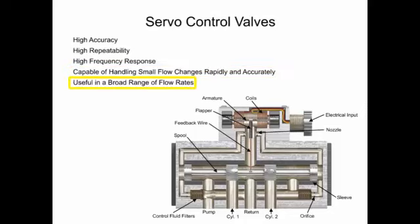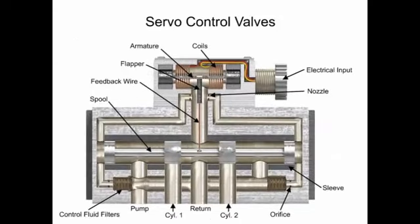Servo valves are highly responsive and capable of handling minuscule flow changes both rapidly and accurately over a broad range of flow rates, but at an extra cost. The main difference between proportional and servo valve circuit design is that servo systems have a method of feedback that assures the actuator is doing what the controller tells it to do.